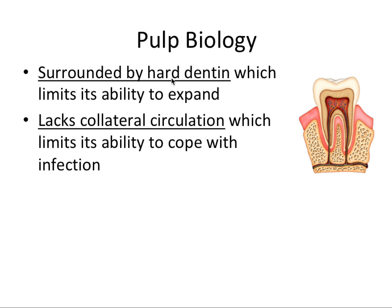The pulp is also surrounded by hard dentin — what those odontoblasts have secreted as the tooth was forming and after formation is complete. This hard dentin creates a pressure system which limits the pulp's ability to expand. So if pressure is building up and some infection has taken place, it has a lot of trouble expanding against this hard dentin. It also lacks collateral circulation, which limits its ability to cope with infection — basically there's one way in, one way out.